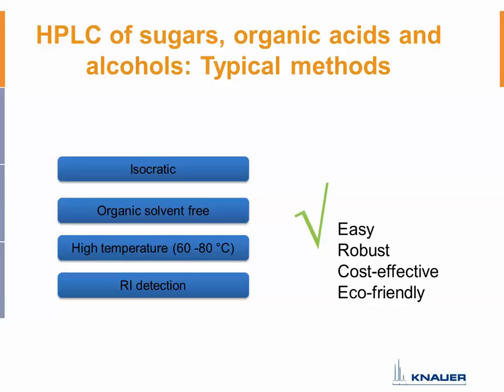To sum it up: the HPLC of sugars, organic acids, and alcohols uses really easy methods. Typically you are using these columns in an isocratic mode and they are typically organic solvent-free, which saves money and protects the environment. They are used at higher temperatures and you often use refractive index detection, which is perfectly suited for sugars and organic acids. Overall, you get easy, robust, cost-effective, and eco-friendly methods — which is why these columns are perfectly suited for food analysis.